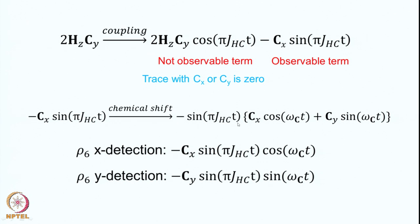We keep the −sin(πJ_HC · t) factor outside and evolve the Cx operator under the carbon chemical shift. This gives: Cx cos(ωC · t) + Cy sin(ωC · t) — the normal chemical shift evolution under the carbon Zeeman Hamiltonian. If we observe the x magnetization we get the Cx term; if we observe y magnetization we get the Cy term. Therefore for x detection, ρ6 gives −Cx sin(πJ_HC · t) cos(ωC · t), and for y detection we get −Cy sin(πJ_HC · t) sin(ωC · t).